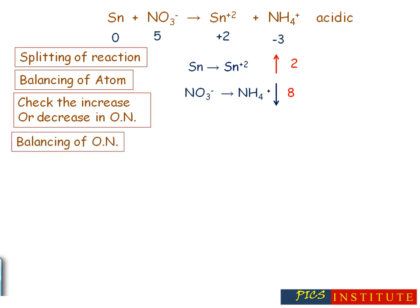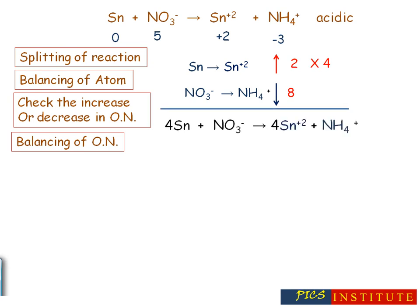Now balance the oxidation number by multiplying with a suitable number, because increase in oxidation number should be equal to decrease in oxidation number. So multiply equation number one by four — we get the resulting equation, in which oxidation number is balanced.